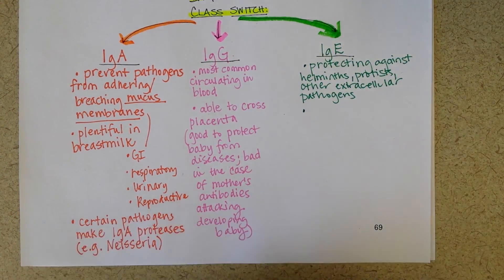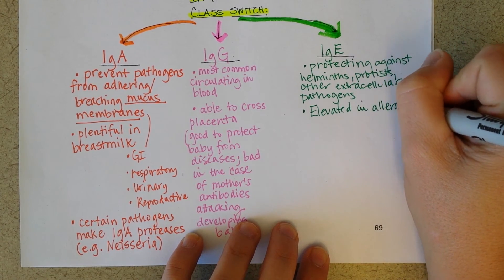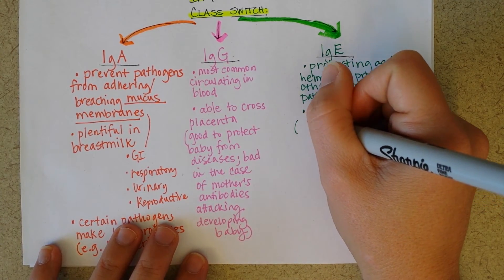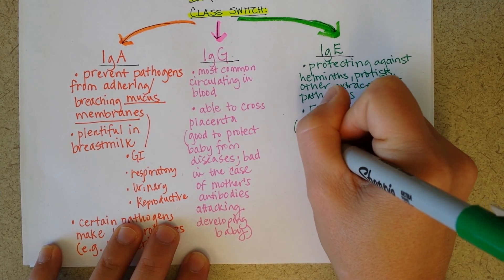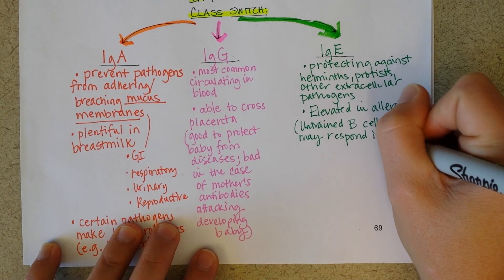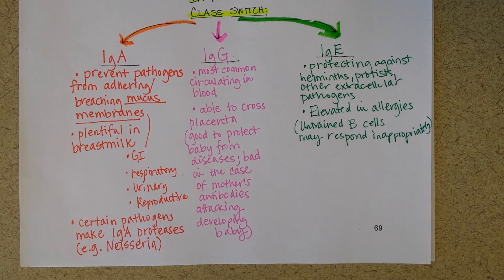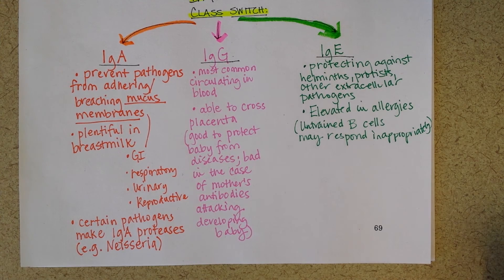With IgE, most of the attention it gets is bad — it's elevated in allergies. People with chronic allergies tend to have abnormally high levels of IgE antibodies. One theory is that untrained B cells may respond inappropriately. The idea is that if a child is exposed to helminths and protist infections as a child, they're in theory not going to be inappropriately producing IgE antibodies, which we do find associated with allergies. A history of worm infections does seem to be inversely related to allergies.